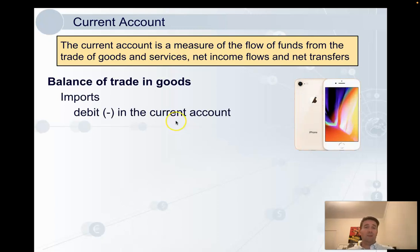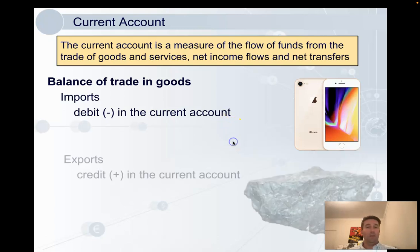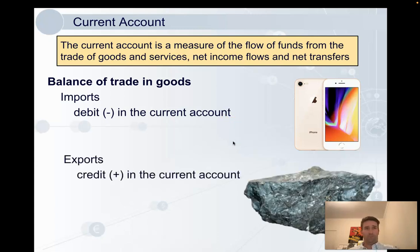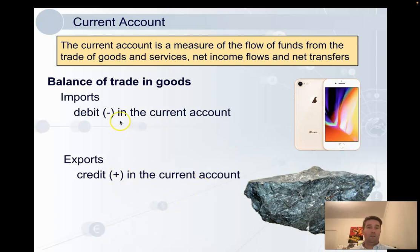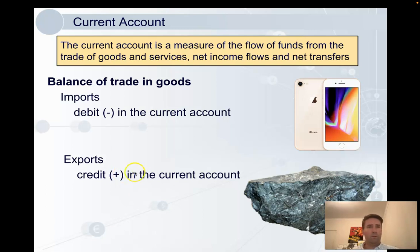Imports are a debit in the current account because we're sending money out of the country — money is leaving. Exports, for example the iron ore that we send over to China, are a credit because money is coming into Australia. So we just need to know whether to denote these as debits or credits. Some of this can come up in paper three when we work with the numbers, but maybe also paper two these days.